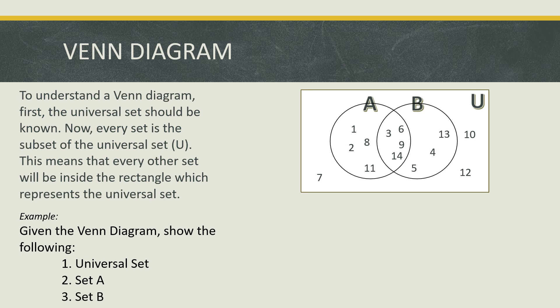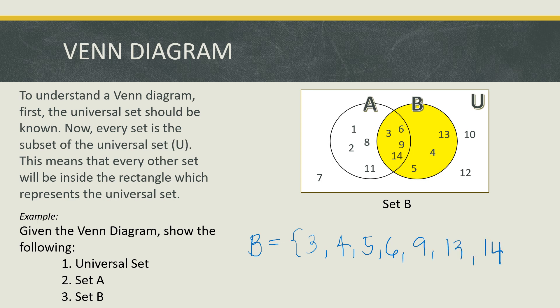How about set B? We also have circle B, and every element in circle B belongs to set B. Therefore, we need to shade circle B only to get the elements of set B. Set B has the elements 3, 4, 5, 6, 9, 13, and 14. These are the elements that belong to set B.